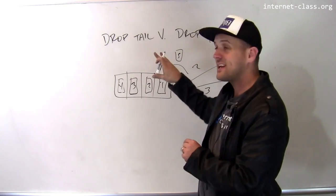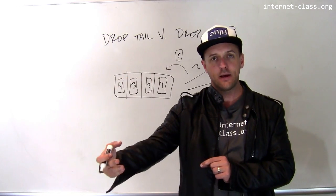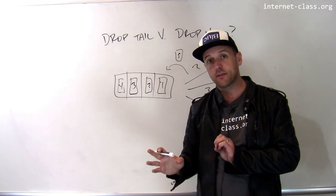So somebody out there is sending me data too quickly, and I need to tell them, I need to send them a signal that I'm overloaded and you should slow down. That's what happens, right?